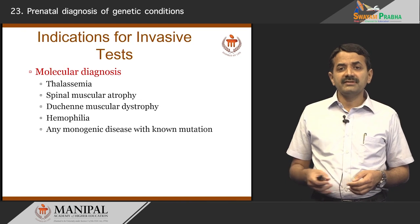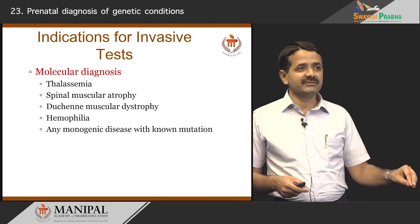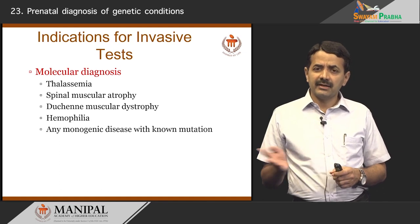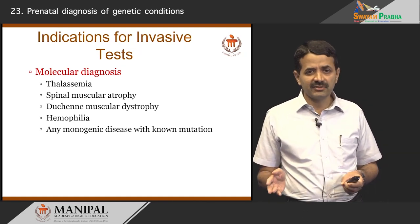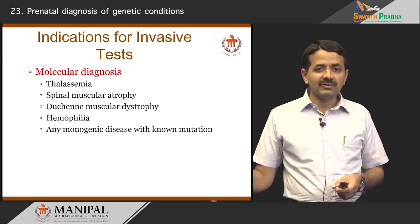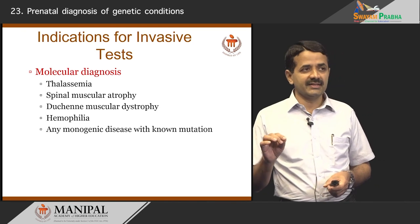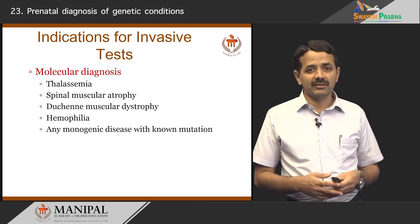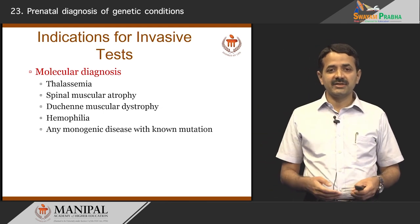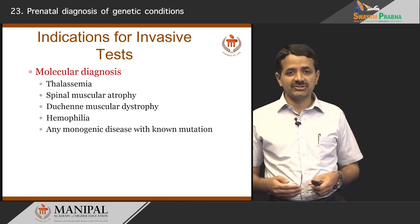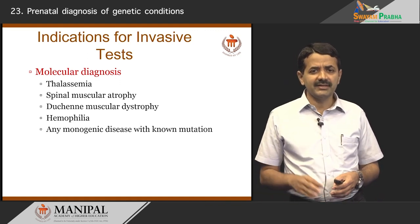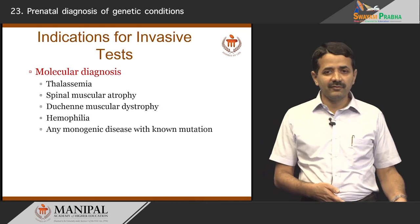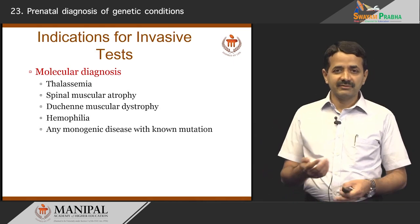The next reason for invasive testing is molecular diagnosis. We take fetal DNA and test for genetic disorders. We have approximately 18,000 to 19,000 genes and nearly 3,000 to 5,000 monogenic disorders. In principle, we can test all of them by taking a DNA sample from the placenta or amniotic fluid, which matches the fetus's DNA. The most common indications include thalassemia, spinal muscular atrophy, Duchenne muscular dystrophy, and haemophilia A and B. A prerequisite is that a known mutation must be identified beforehand — we need a diagnosis before we can do prenatal diagnosis.